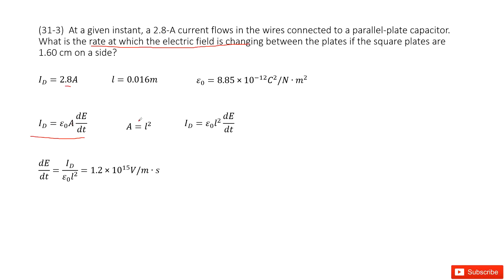A can be written as L squared. This is the cross-sectional area, L squared. And then, very easy, you can get the function for dE over dt.